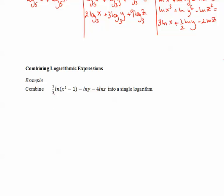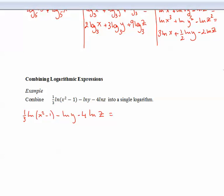So in this example, we need to combine one third ln of x squared minus one, minus ln y, minus 4 ln z. So the first thing I will take care of is the exponents. So let me bring this one third here and the number four here. So I will have ln of x squared minus one to the power of one third, minus ln y, minus ln z to the fourth.